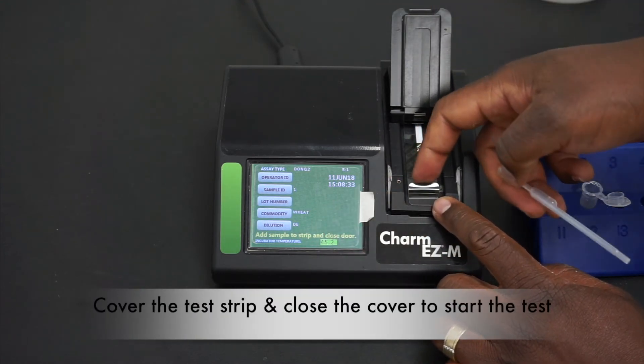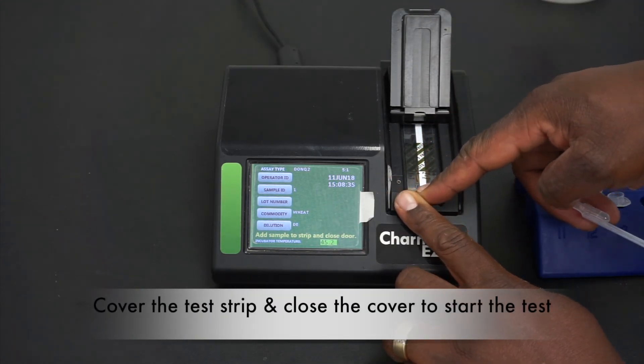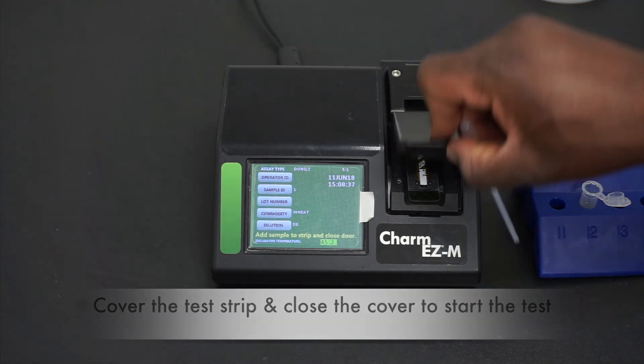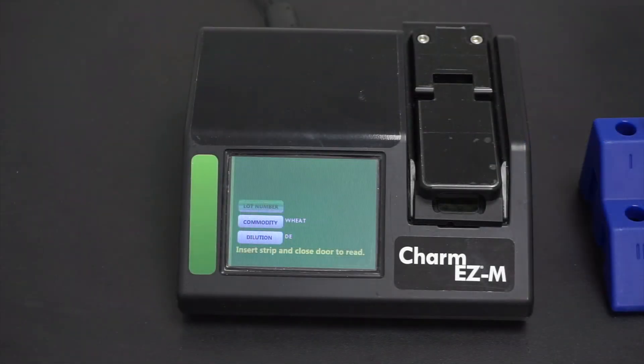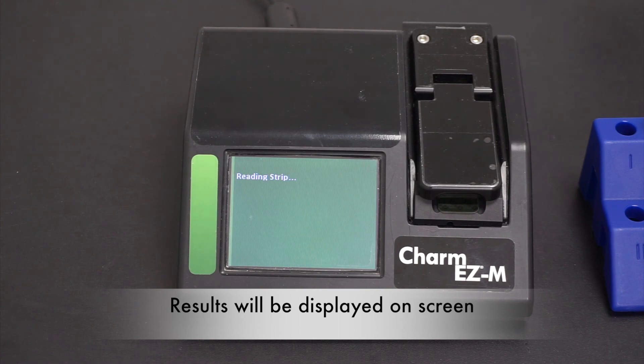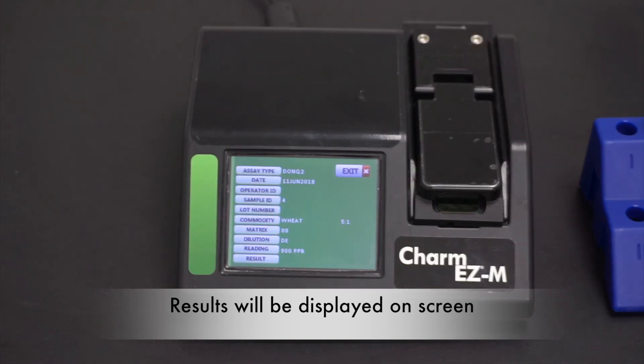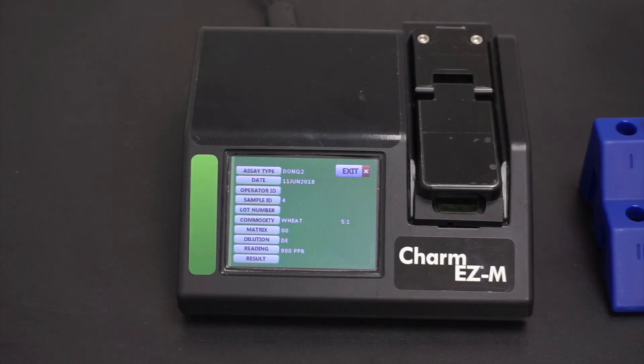Cover the test strip and close the EZM cover. The result will then be displayed on your Charm EZM reader and automatically saved.